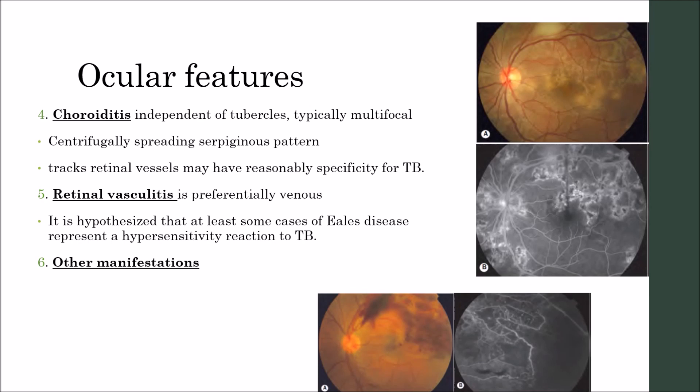Other features include choroiditis, which is independent of tubercles. These are typically multifocal and display a centrifugally spreading serpiginoid pattern. They are being increasingly recognized. Choroiditis that tracks retinal vessels may have reasonable specificity for TB.